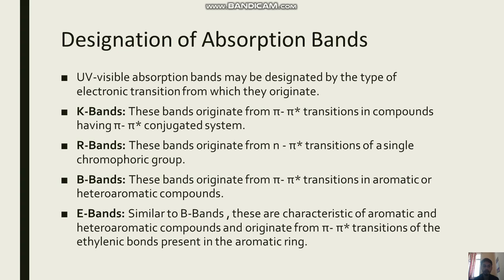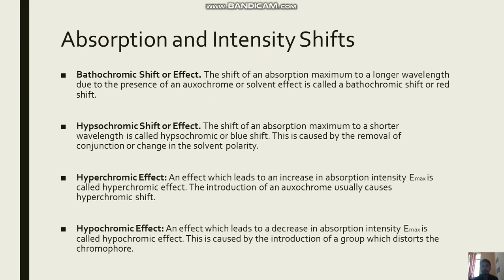And E-Bands, similar to B-Bands, are characteristic of aromatic and heteroaromatic compounds. They originate from Pi-Pi* transitions of the ethylenic bonds present in the aromatic ring.